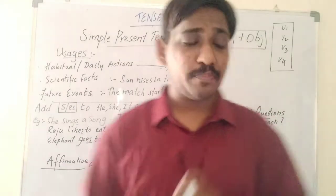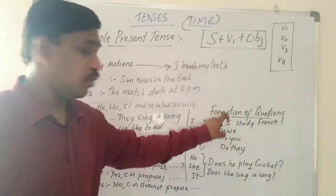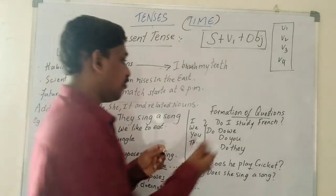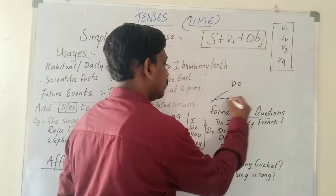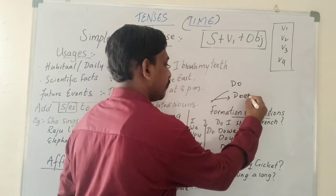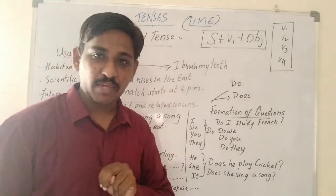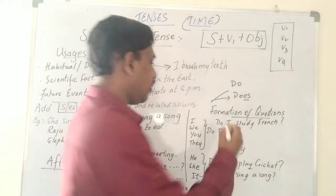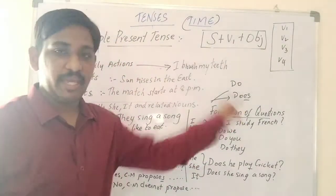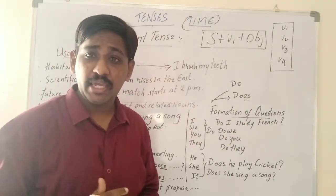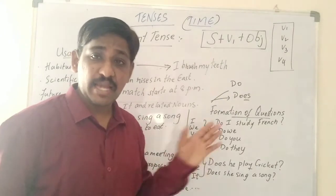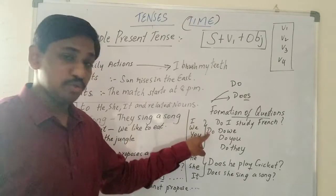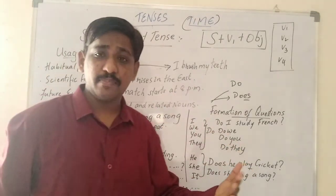Now let us see how to form questions. There are two question words: do and does. Does we use for he, she, it. Do we use for I, we, you, they. Let us take some examples. I study French — the question is: do I study French? We study French — do we study French?